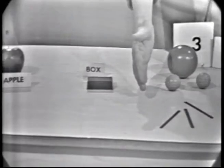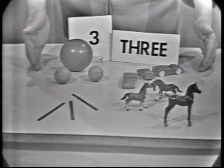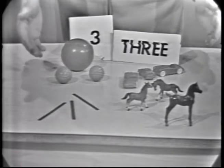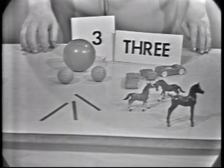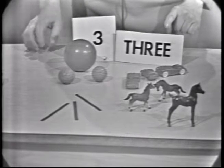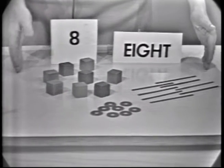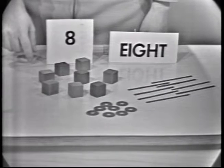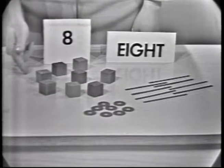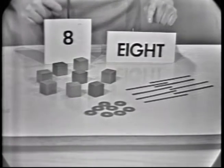By considering sets of objects such as we have here, we developed an understanding of a natural number. We abstracted a property common to these sets and all sets that are equivalent to them. We name this number three — the symbols: a word, a numeral. A property common to these sets, and all sets that could be put into one-to-one correspondence with any given one of these, we called eight. And the symbols: a word, and a numeral.